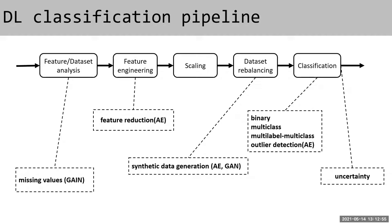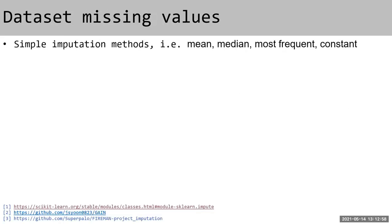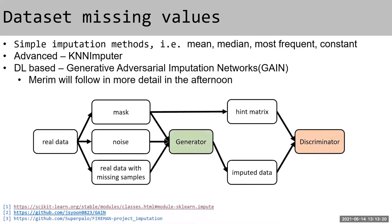There is one topic that has become more popular in recent years, and that is measuring the uncertainty of classification results. For missing data, simple imputation methods used in machine learning take the mean, median, most frequent, or constant values. More advanced approaches use KNN to impute missing data, or in the case of deeper networks, Generative Adversarial Imputation Networks (GAIN).